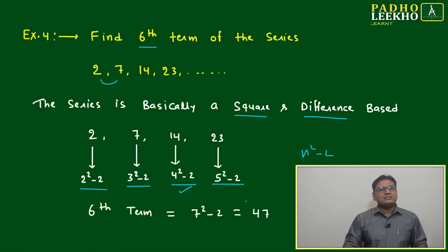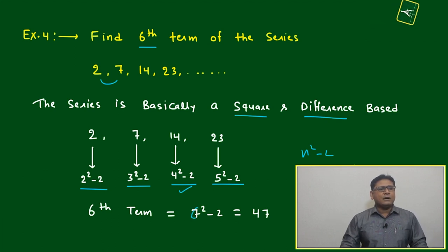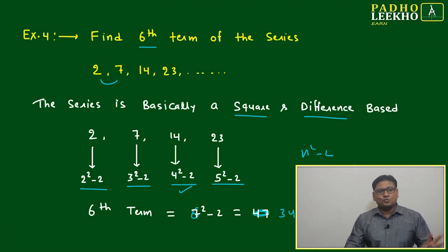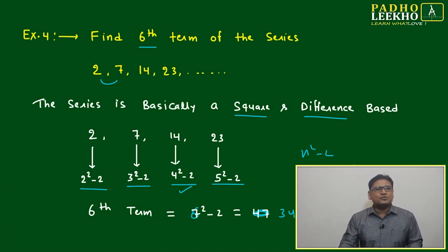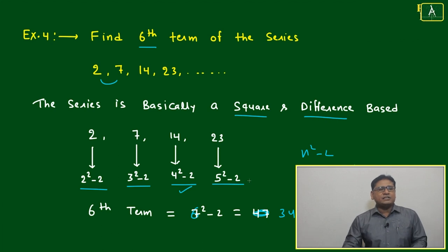The next term, this is 2, 3, 4, 5, so the next term must be here 6² - 2, and your answer will become 34. The sixth term will be 2² - 2, 3² - 2, 4² - 2, 5² - 2, and this is your sixth term.